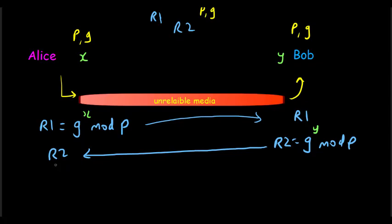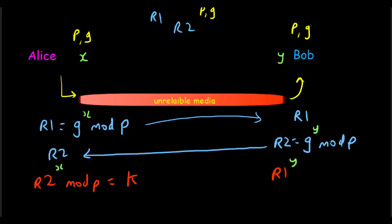Now the last step determines the key. Alice receives R2 from Bob and computes R2 raised to her private number X, mod P, obtaining a key K. Bob takes R1 and computes R1 raised to his private number Y, mod P. Coincidentally, Bob also gets the same key K.